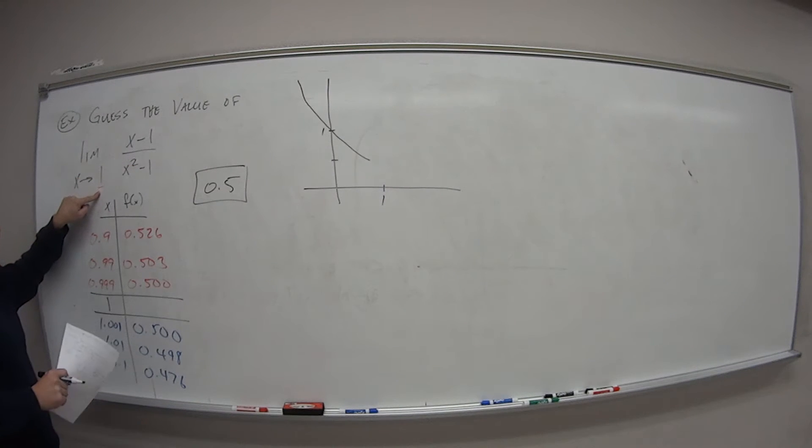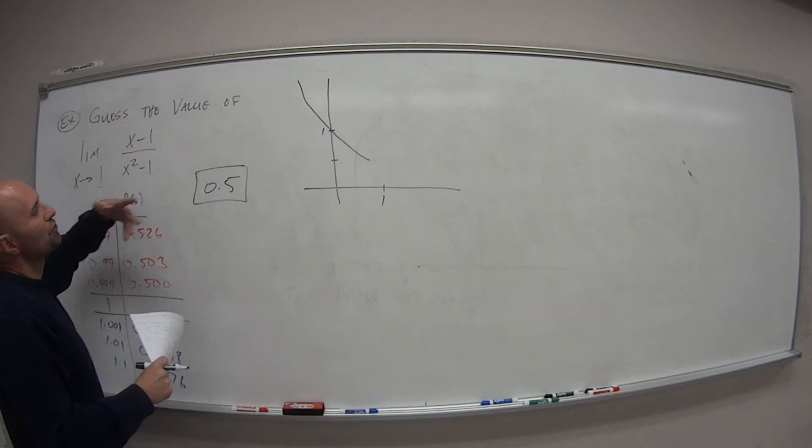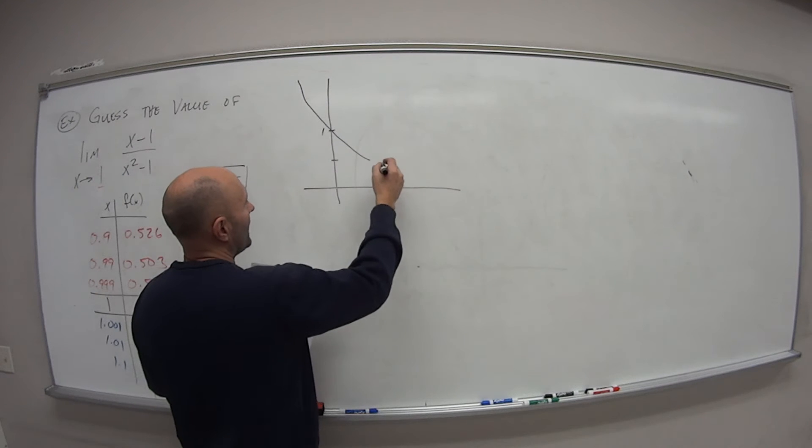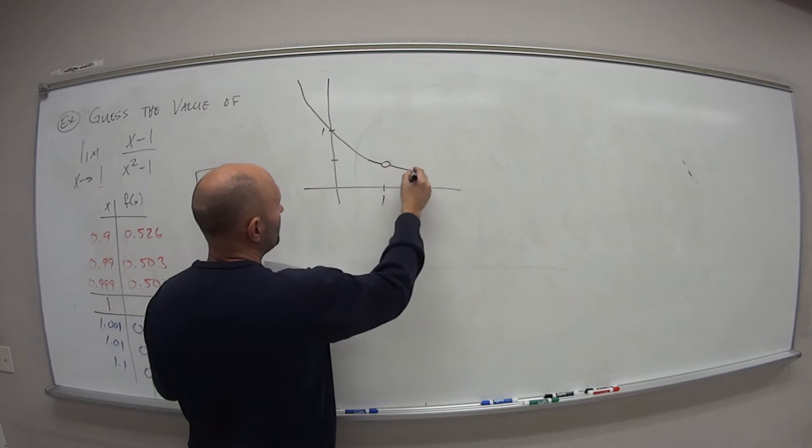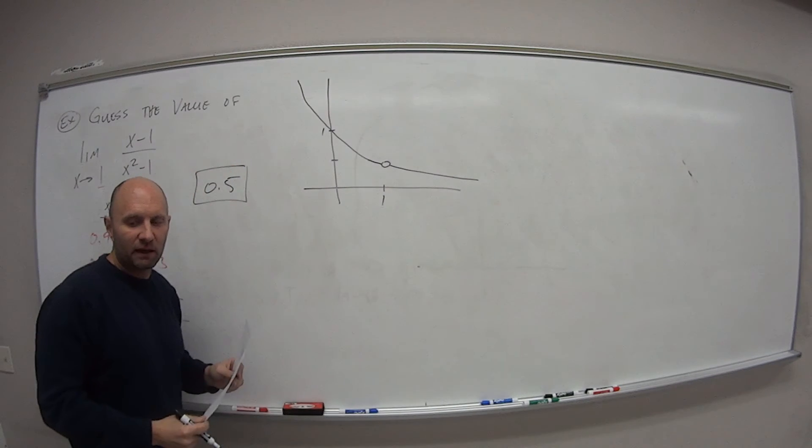But when we actually hit our value for x equals 1, well we know that's not part of our domain, right? We can't actually have 1. We have either an asymptote or in this case we have an open circle and a graph that continues like that.